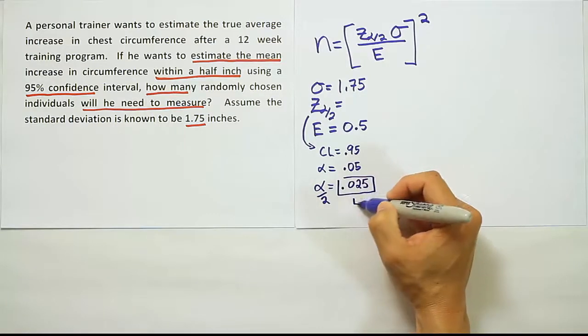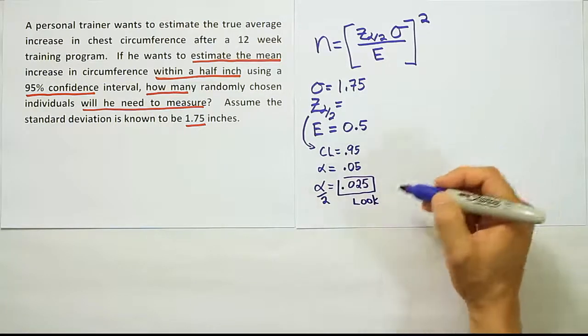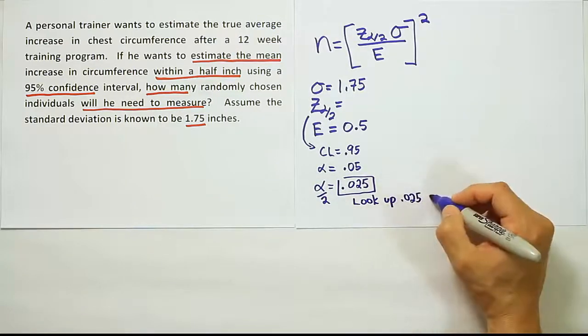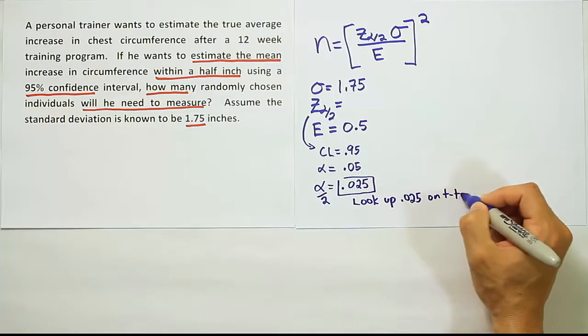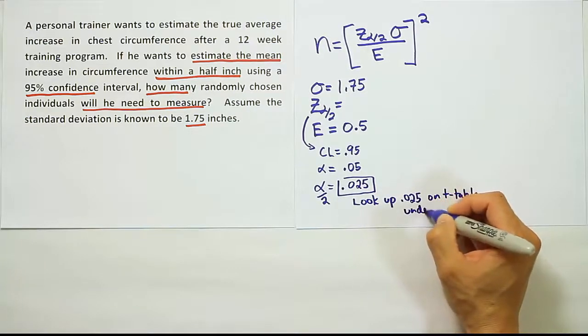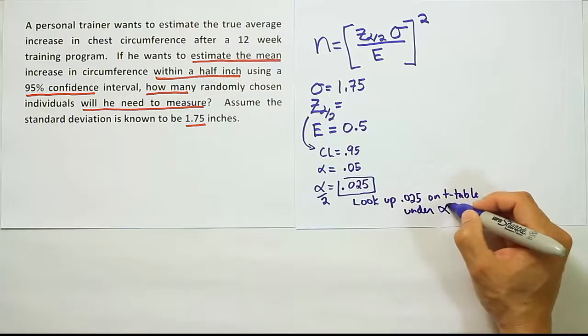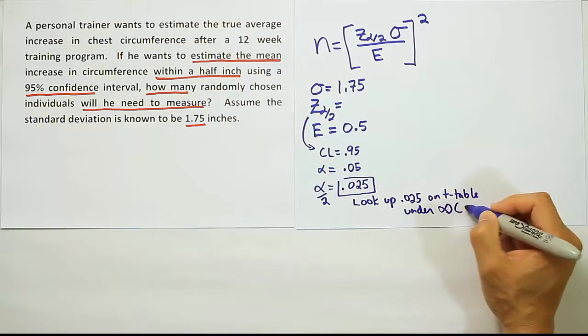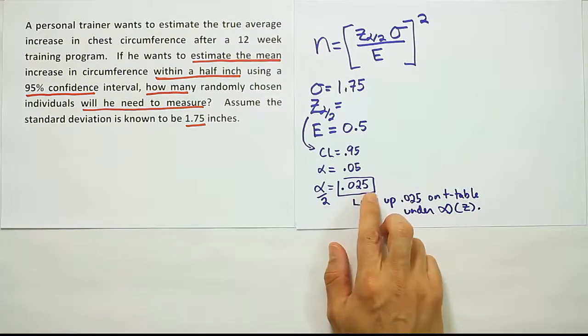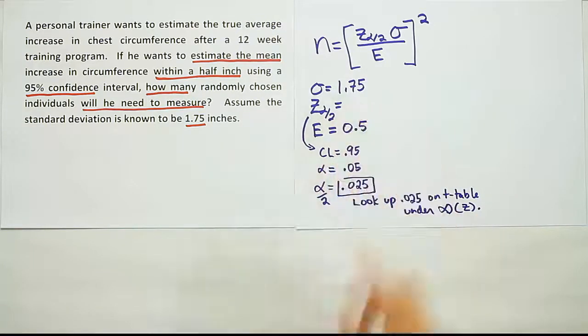Look up 0.025 on the t table, 0.025 under infinity. Infinity is basically where the z values are on the t table. We're going to look up 0.025 under the infinity row. Let's go to the table now to look up 0.025 and get our z alpha divided by 2 value.